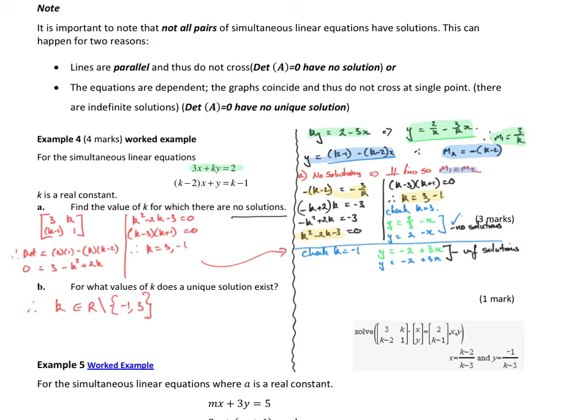So what that tells me is if k is equal to 3 or negative 1, I don't get a solution. Now, by not getting a solution or not getting a unique solution, it means that my lines are either parallel or they're the same. So I've got to check. So if I put k equals 3 into the equations, I get y is equal to 2 on 3 minus 3 on 3, which is 1x. So I've got a gradient of negative 1. If I put k equals 3 into the blue equation, I get 3 minus 1, which is 2, minus (3 minus 2), which is 1. So minus 1x. So I get 2 minus 1x. So clearly, same gradient, different y-intercepts, so they're parallel lines, I have no solution.